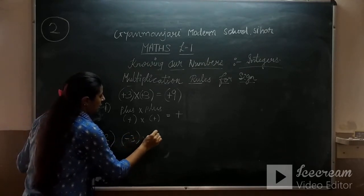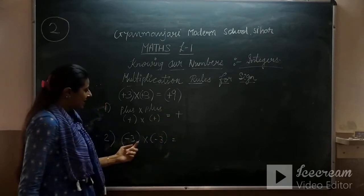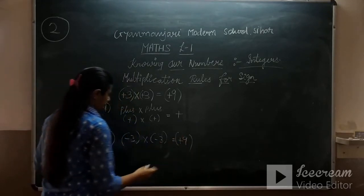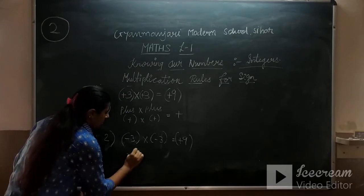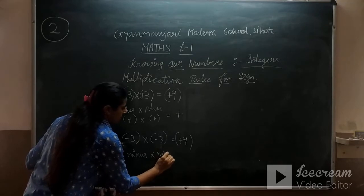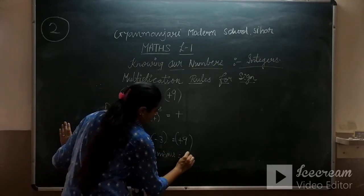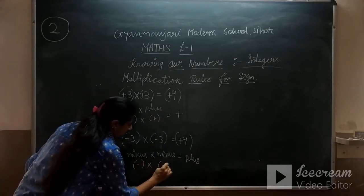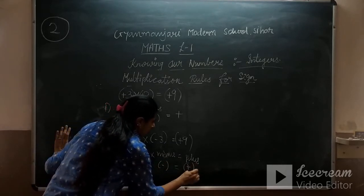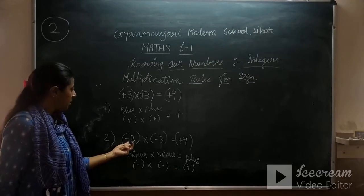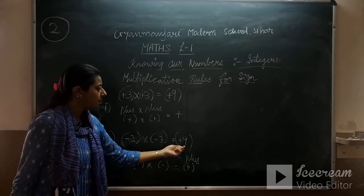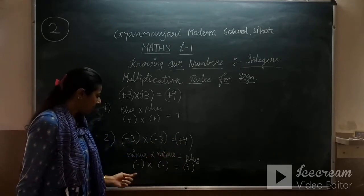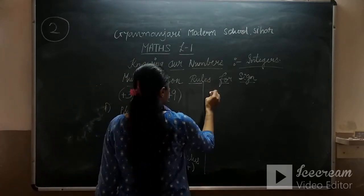The second rule: minus 3 into minus 3 — three threes are 9 — but minus into minus gives plus. So minus into minus will be plus. For example, minus 3 into minus 3 will be plus 9, because minus minus is plus.